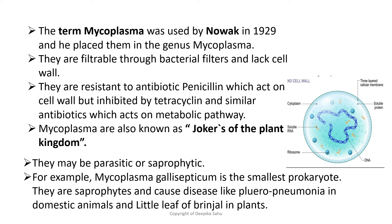Mycoplasma are resistant to penicillin because they lack the peptidoglycan cell wall that penicillin targets. Erythromycin and clarithromycin are more frequently used to treat atypical pneumonia caused by mycoplasma. Tetracycline is preferable when there is central nervous system involvement.